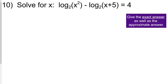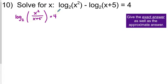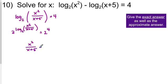This last example is very similar — we have multiple logarithms in the equation. We have a log minus a log, so we use the quotient property to combine them into log base 2 of the quotient x squared over x plus 5, which equals 4. We exponentiate: 2 to the left equals 2 to the right, giving x squared over x plus 5 equals 16. Then multiply both sides by x plus 5 to clear the fraction.